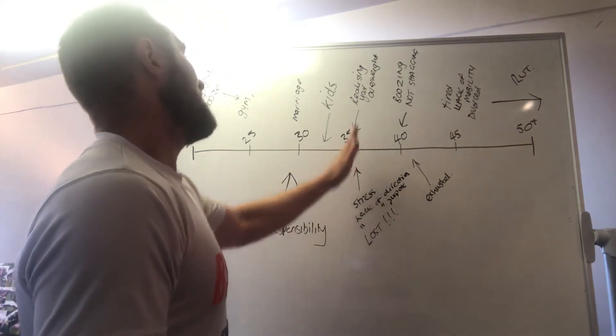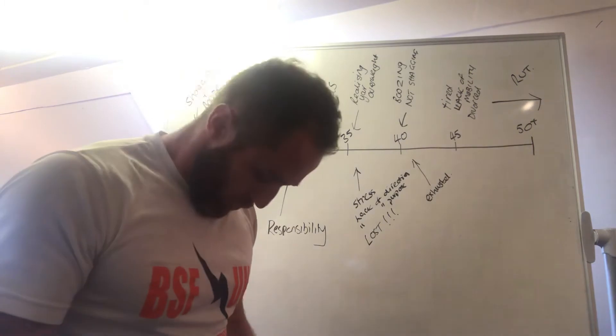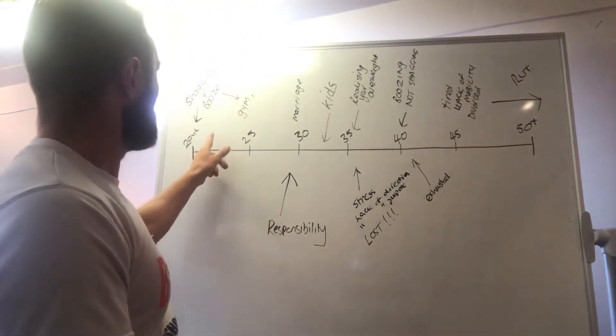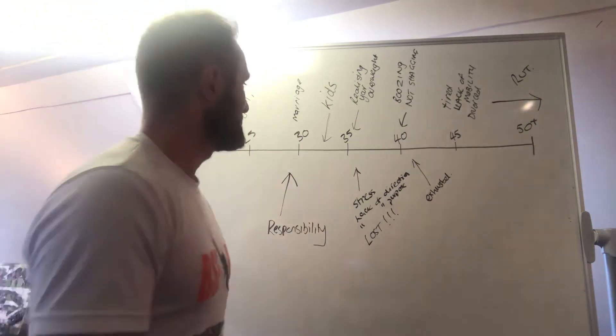So we're looking to 35 and then realizing you're overweight, you're looking down and there's a stomach there because your metabolism is not working as quickly as it used to when you were shagging, boozing and gyming. So you're fucked.